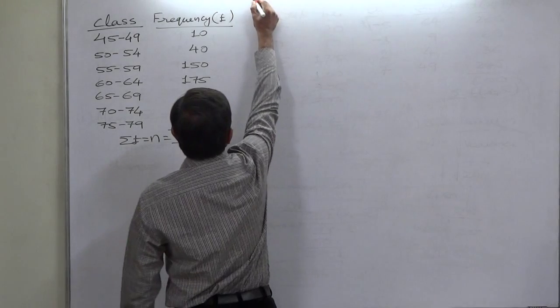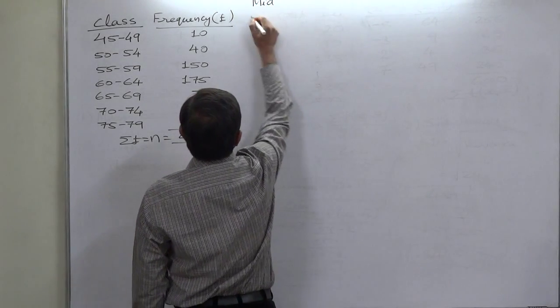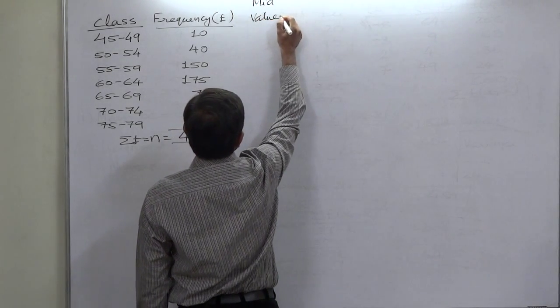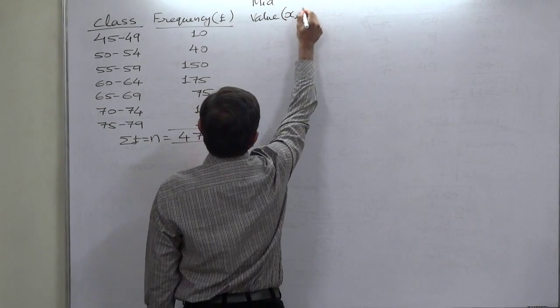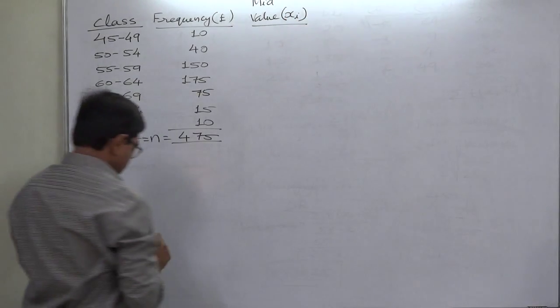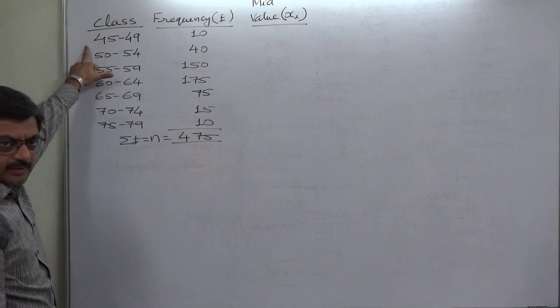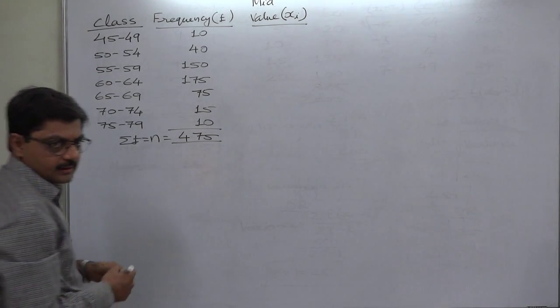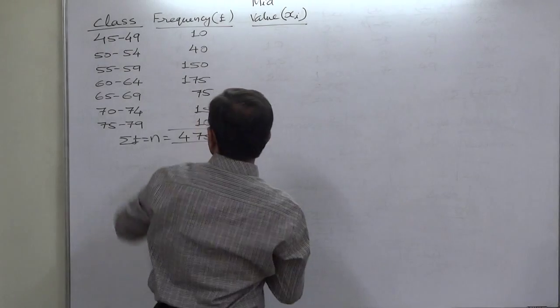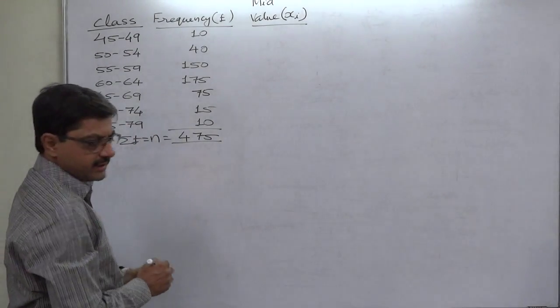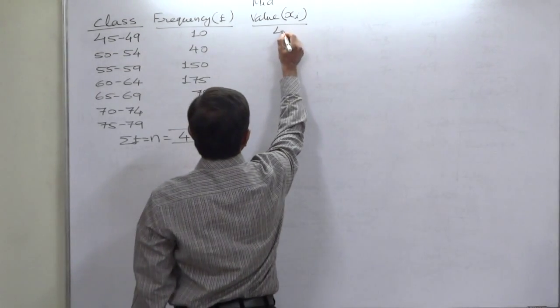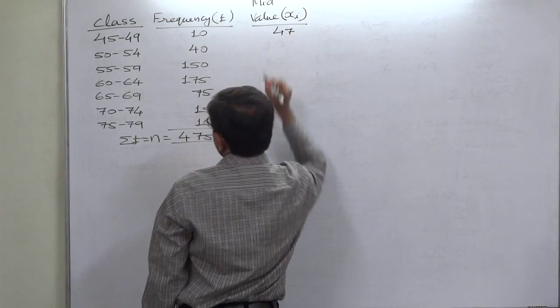First of all to calculate mean, let us take mid values or mid points x. The first class width is 45 to 49, what should be the mid point? It should be 45 plus 49, that is 94 divided by 2, it is 47.